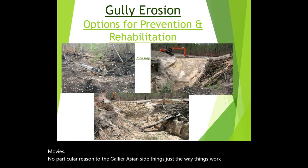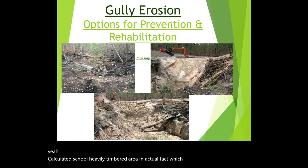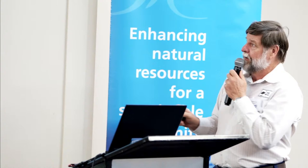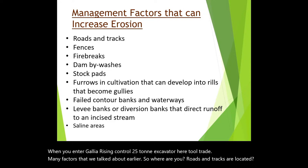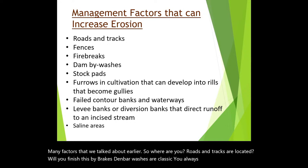Here's a gully that's formed in a heavily timbered area — actually in forestry for many years — and still this gully was very, very active. We had to put a rock chute in the top of there. When you're into gully erosion control, your 25-tonne excavator is your tool of trade. Managing factors: where are your roads and tracks in a paddock, your fences, fire breaks? Dam by-washes are a classic — you've always got a dam by-wash that's going to erode out somewhere. Stock pads. Furrows into cultivation that can develop into rills and become gullies.